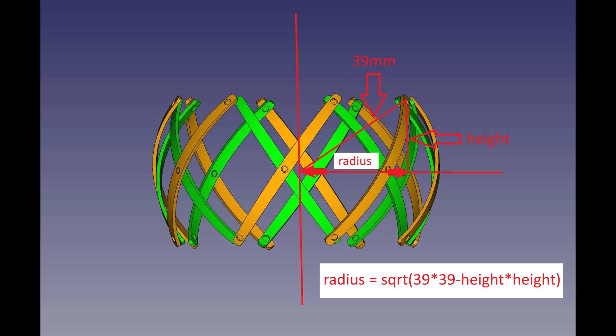As the bar is curved, the radius at the top is smaller than 39 mm, so with the height, the radius can be calculated.